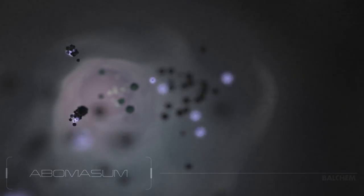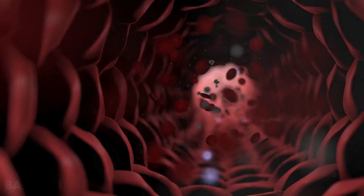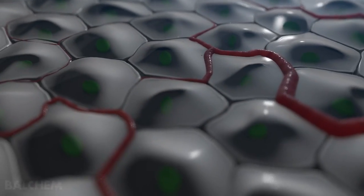The amino acids then travel to the small intestine, where they're absorbed into the bloodstream and transported to cells throughout the body, including cells in the mammary gland.